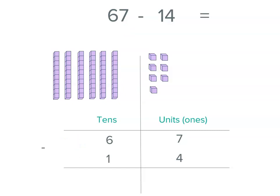Then we subtract. We're subtracting 4 of the units. Because remember, 14 is made up of 1 of the tens and 4 of the units. So 7 units minus 4, or 7 units take away 4, 1, 2, 3, 4, means there are 3 units left.